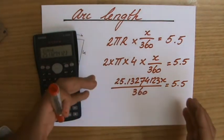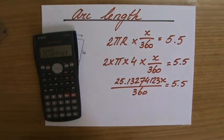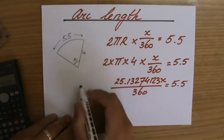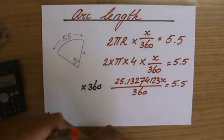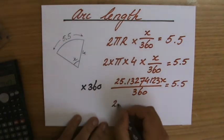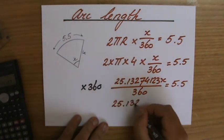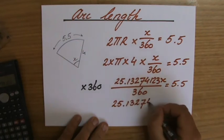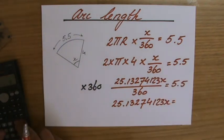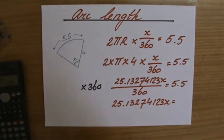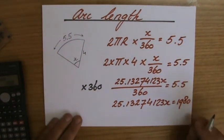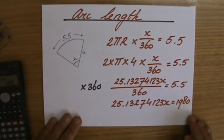How would I solve an equation like this? How do I rearrange it? Well, you should get rid of that fraction. And we multiply both sides, therefore, by 360. So I'm going to get 25.13274123x, and that equals 5.5 times 360, yeah? 1,980. Okay. The year I was born, by the way. Well, that's a coincidence. Anyway...